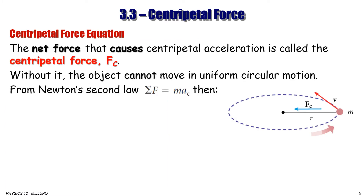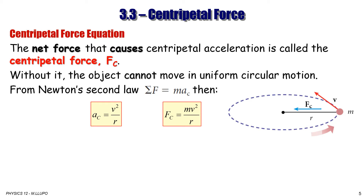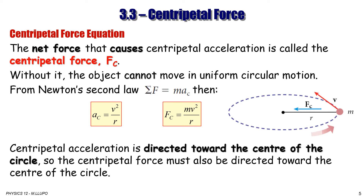As a conclusion, the net force causing centripetal acceleration is called centripetal force, symbolized as Fc. Without it, the object cannot move in uniform circular motion. From Newton's second law, force equals mass times acceleration, and since centripetal acceleration equals v² over r, we can calculate centripetal force as Fc = mv²/r. Centripetal acceleration is directed toward the center, so centripetal force must also be directed toward the center of the circle.